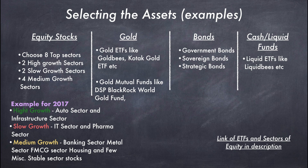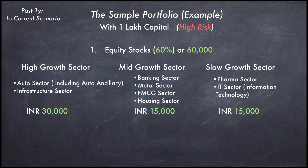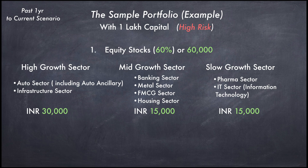Now this is an example of how I choose the equity, gold, and bond sections. I'll skip through the slides so you can quickly go through it. I have created a sample portfolio which I generally use, keeping in mind the past one year to the current situation. I have chosen the high growth sector, the mid growth sector, and the slow growth sector and allocated funds across these. For example, in a high risk portfolio comprising 60% of my funds, I allocate further into three segments: high growth, mid growth, and slow growth sectors.